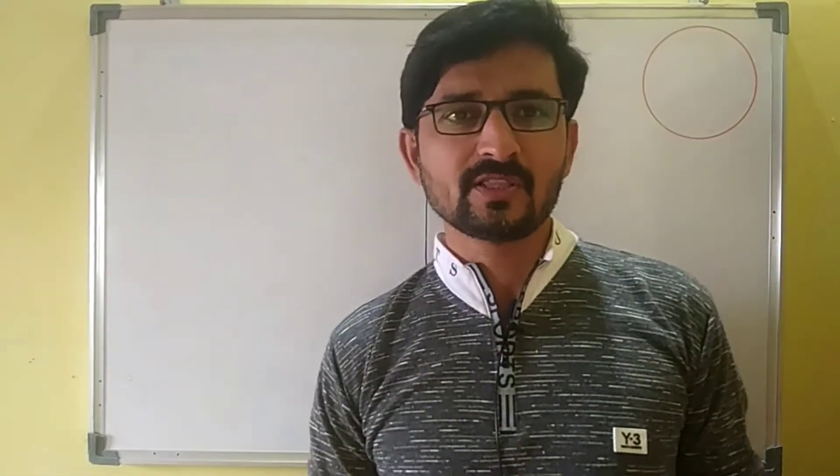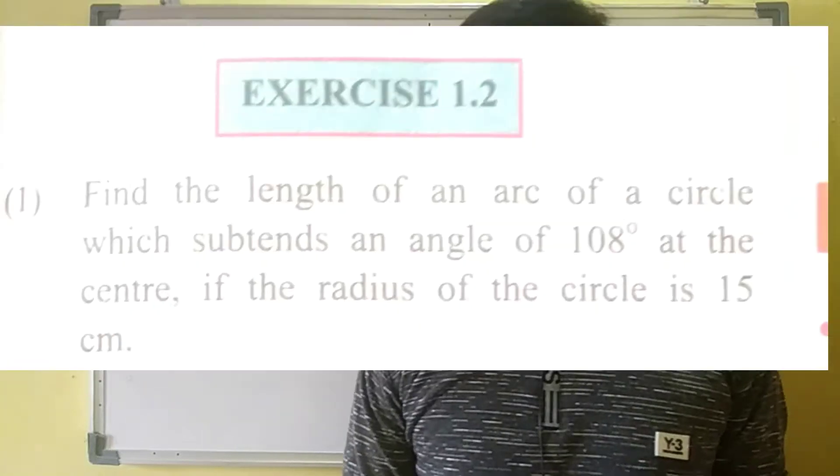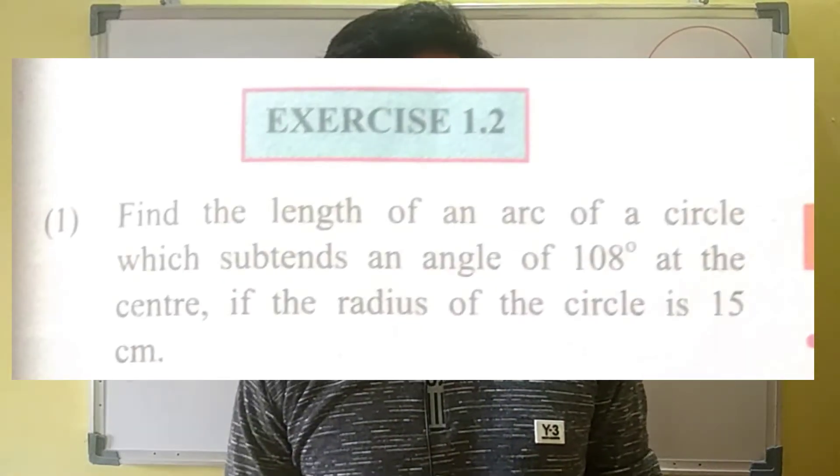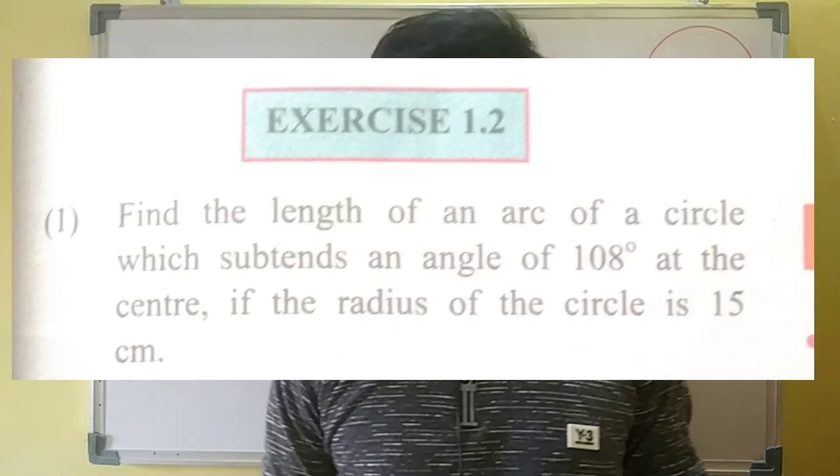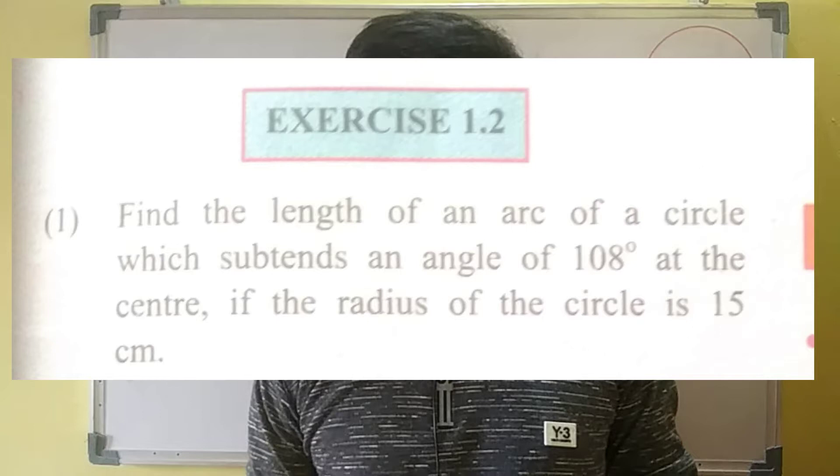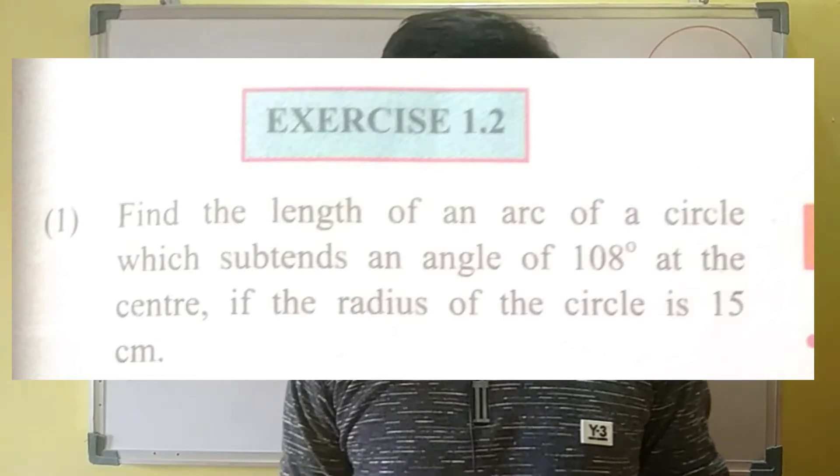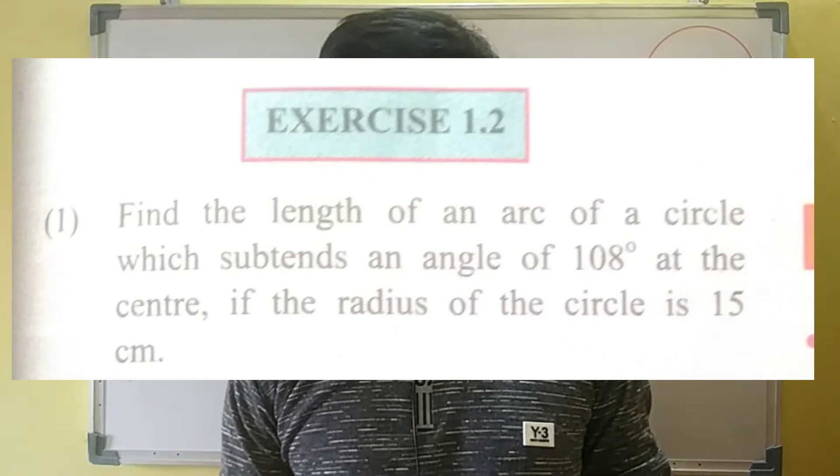Hey guys, hello and welcome to 12th Math Easy, Angle and Its Measurement, Exercise 1.2. See the example number one on the screen. First read the example carefully. Find the length of an arc of a circle which subtends an angle of 108 degrees at the center if the radius of the circle is 15 centimeters.